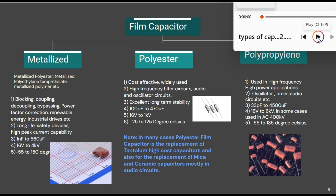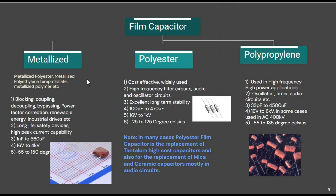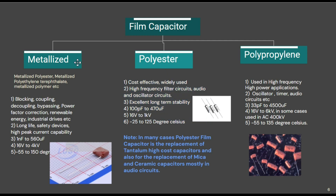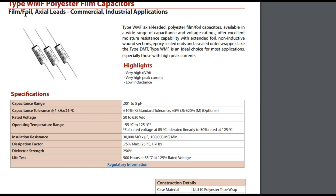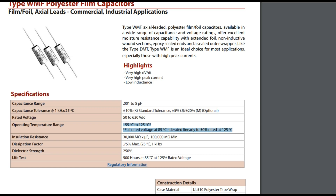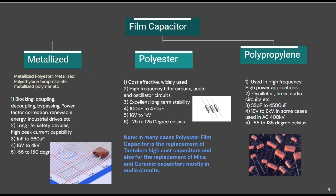The second most common type is the polyester film capacitor. These are highly cost-effective and widely used in electronic circuits, used in high-frequency filter circuits, audio, and oscillator circuits. They have excellent long-term stability and are available in capacitance from 100 picofarad to 470 microfarad, voltage from 16 volts to 1 kilovolt, and temperature range from minus 25 to plus 125 degrees Celsius. In many cases, polyester film capacitors are a replacement for high-cost tantalum capacitors and also for mica and ceramic capacitors, mostly in audio circuits.